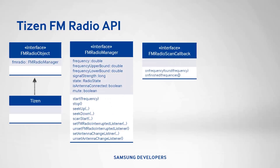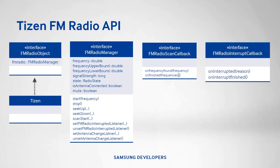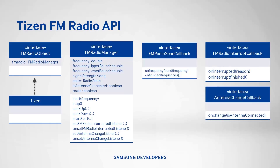The FM radio scan callback interface provides methods when a frequency is found or when scanning finishes. This is needed when you call the start scan function. The FM radio interrupt callback gives methods when an ongoing radio stream is interrupted by a more important phone service, like a phone call ring or a message notification. This is a parameter for the set FM radio interrupted listener. Lastly, the antenna change callback interface provides methods when a change in the antenna is detected, such as when it is attached or detached, which is useful when prompting the user to plug in their headphones.